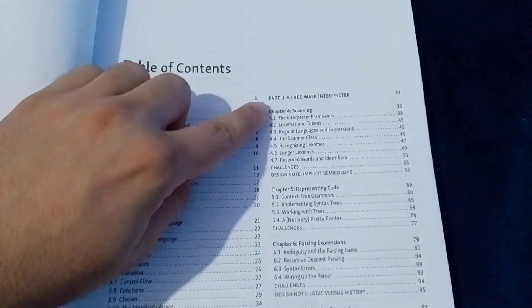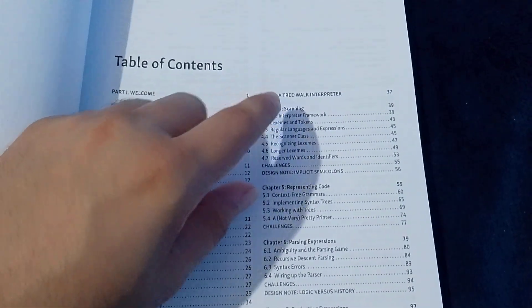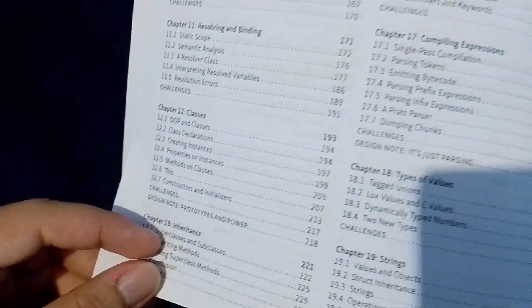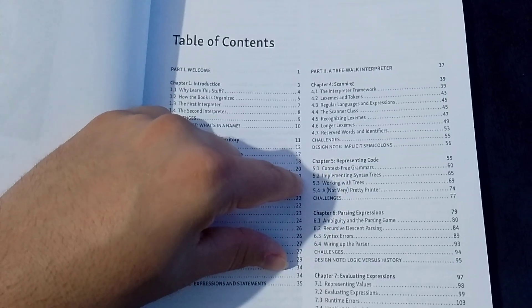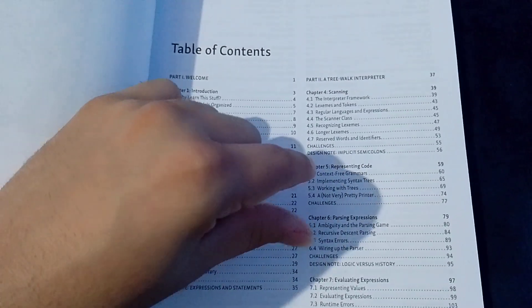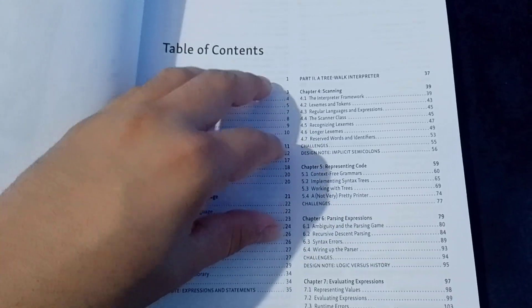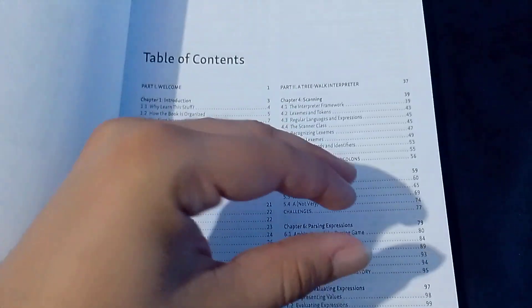In the part two, it contains from chapter four until chapter 13. In this part, we are going to implement the LOX language. For those who don't know, the LOX language is the language designed by Robert himself just to explain the concepts about how to create an interpreter.